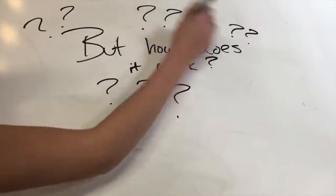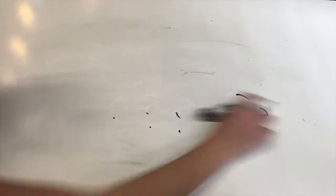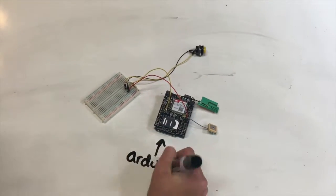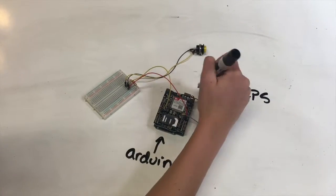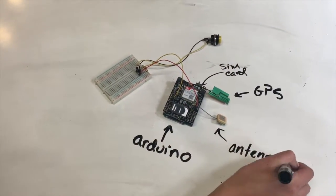At this point, you're probably thinking, how does it work? Inside of your Teddy Text is a specially programmed Arduino equipped with a GPS, a SIM card, and an antenna.